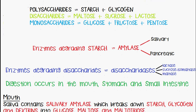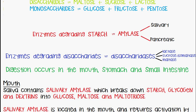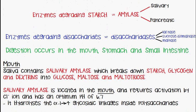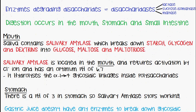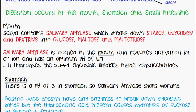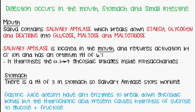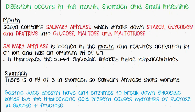Digestion occurs in the mouth, the stomach and the small intestine. In the mouth, the saliva contains salivary amylase which breaks down starch, glycogen and dextrins into glucose, maltose and maltotriose. Salivary amylase requires activation by the chloride ion, has an optimum pH of 6.7, and hydrolyzes the alpha-1,4 glycosidic linkages inside the polysaccharides.